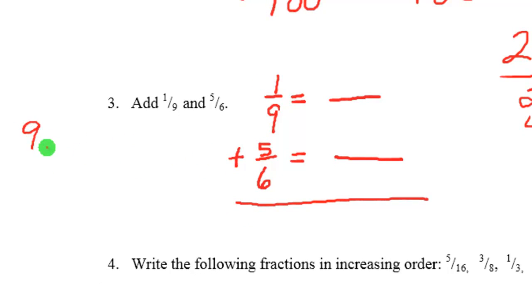9 times 1 is 9. 6 doesn't go into 9. So we've got to go to the next number in the table. 9 times 2 is 18. And guess what? 6 times 3 is 18. So 18 is our least common denominator. So we're going to put 18 down here on both of these.